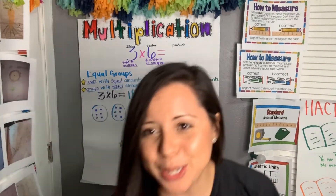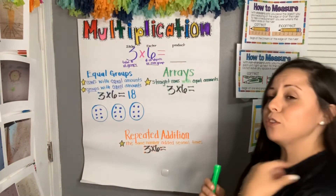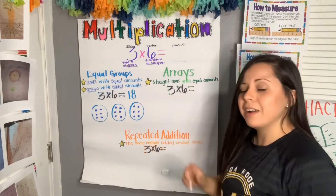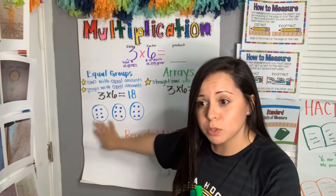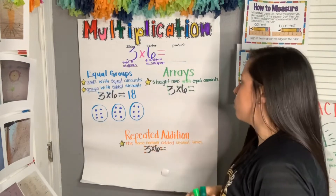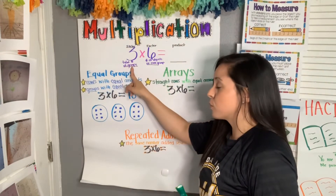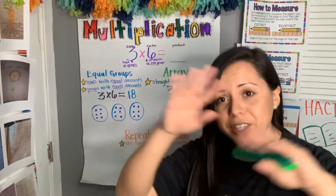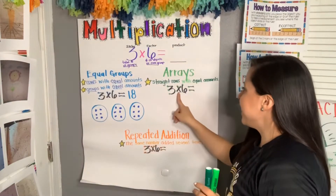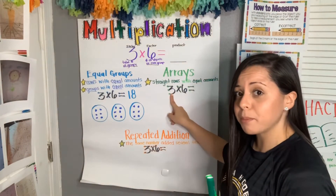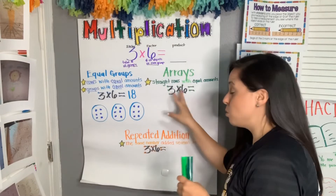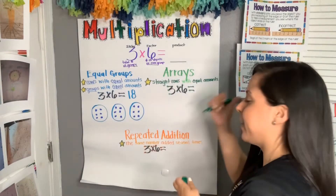The next format we're going to use is called arrays. An array is a straight row with equal amounts. Now instead of equal groups, we do straight rows — like baby shark! In this case, the three still represents the total number of groups or rows. I wanted to keep the same equation to show all the different ways to get the same product. So three times six equals — the first factor tells us the total number of rows, so we'll have three rows.